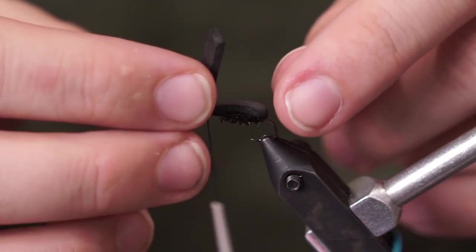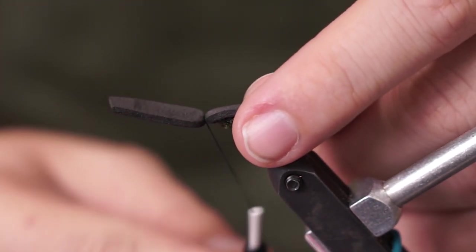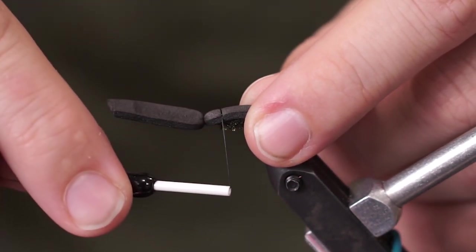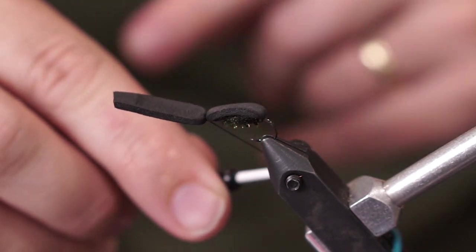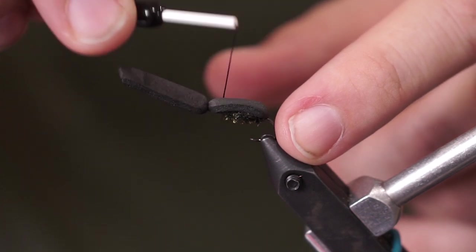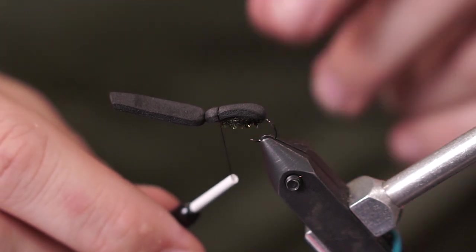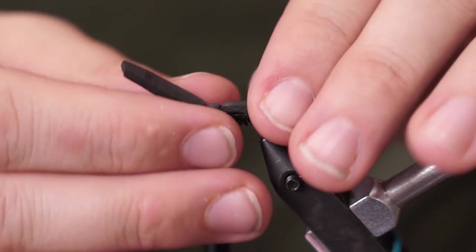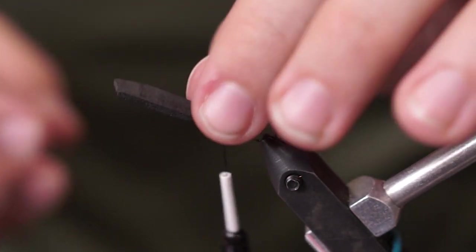So now we're ready to bring our foam back. But to do this and to create a bit of a head on our beetle, we're going to bring our thread back here. So the way I did that is my thread's up at this tie-in point. I'm going to pull my bobbin back towards the bend of the hook and then catch the foam at maybe a quarter inch behind. And I'm going to put about two wraps just to make sure that thread's in position.